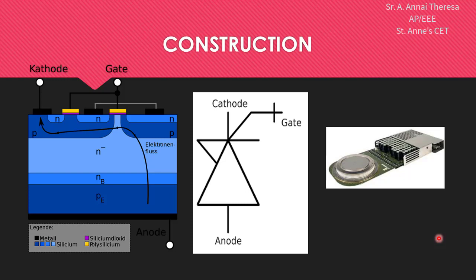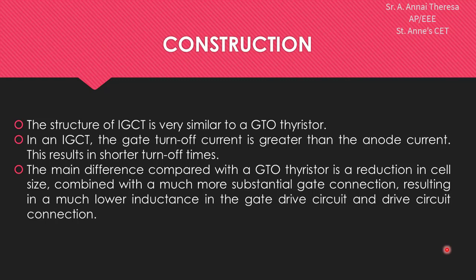In this video, I am not going to explain in detail about the construction of IGCT because the construction of GTO has already been covered in the previous video. I will give some brief explanation about the specific differences available in IGCT. This is the symbol — anode, cathode, and gate — the same as GTO except this symbol. This is the picture of IGCT, and the structure of IGCT is very similar to GTO thyristor.